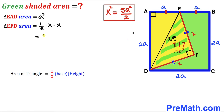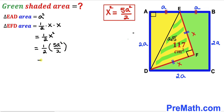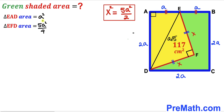For triangle EFD, area equals one half times base times height, where both base and height are x. So area equals one half times x squared. Substituting x squared equals 5a squared over 2: area equals one half times 5a squared over 2, which gives 5a squared divided by 4. So the area of triangle EFD is 5a squared over 4.